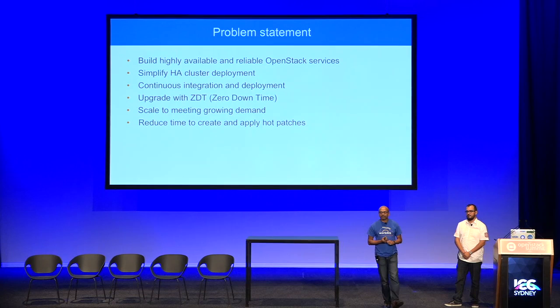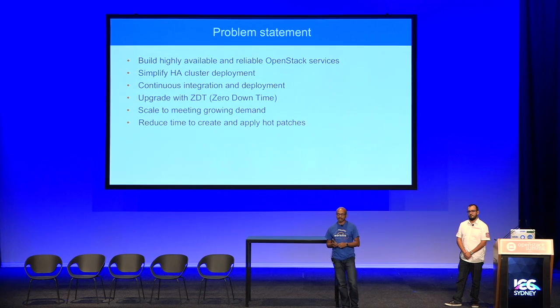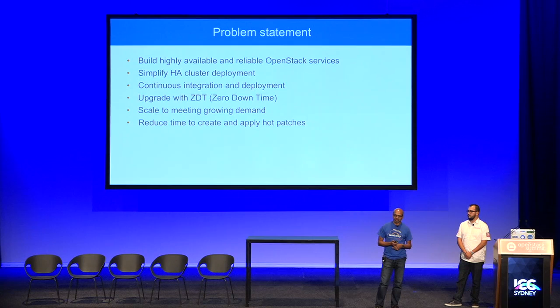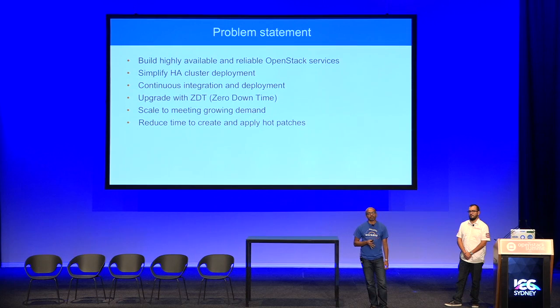The first problem we're trying to solve is building a highly available and reliable OpenStack deployment. Deploying a highly available cluster is not simple — it's very distributed, has many components including stateful services, and you have to manage and orchestrate the deployment order. It's a non-trivial problem. We want to simplify how you deploy an HA cluster while keeping the deployment model as simple as possible.